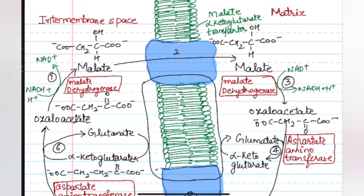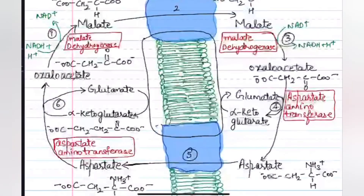Once malate has reached the mitochondrial matrix, with the help of another enzyme — mitochondrial malate dehydrogenase — NADH is regained. NAD+ converts to NADH, and that is how NADH is able to effectively cross into the mitochondria. Malate again converts to oxaloacetate.